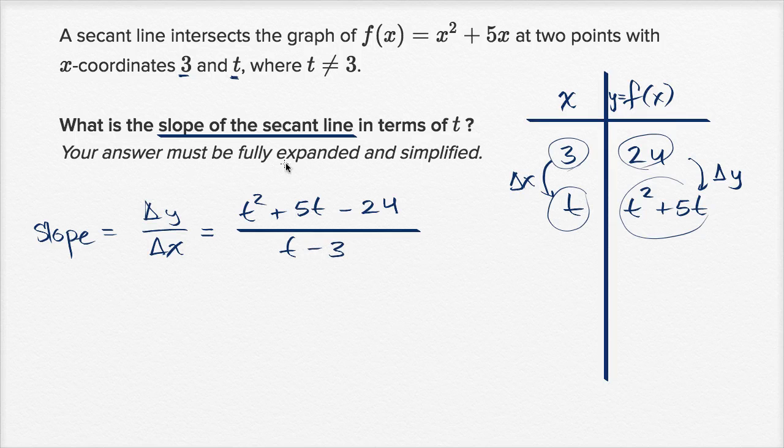Now they tell us our answer must be fully expanded and simplified. So maybe there's a way to simplify this a little bit. Can I factor the top into something that involves a t - 3? So in the numerator, let's see. Negative 3 times positive 8 is negative 24. Negative 3 plus positive 8 is 5. So we can rewrite this as (t + 8)(t - 3).